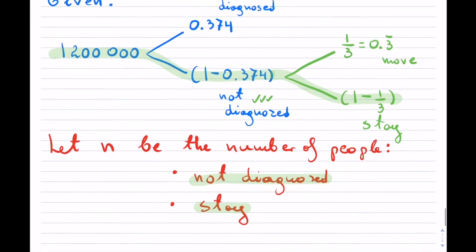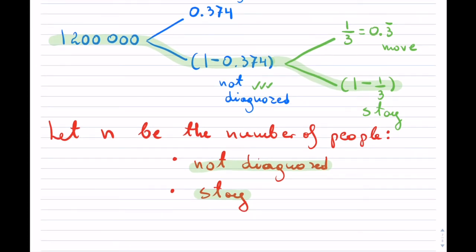And now with this, we can write out our equation. So n equals, I start from the back there, so 1 minus 1 third times 1 minus 0.374 times the 1.2 million.